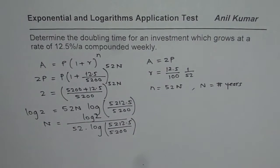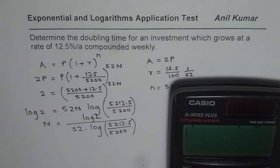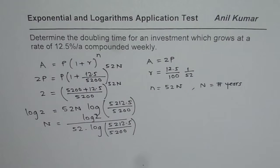Now you have to use your calculator and calculate the answer. We have log of 2 divided by, when you divide put brackets. So we have 52 times log of, within brackets, 5212.5 divided by 5200. This is bracket for log and this is for the denominator, equals to 5.551.